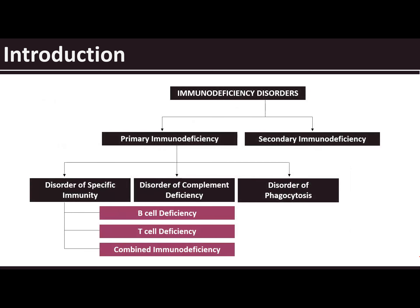Now, what are the different primary immunodeficiencies? Under disorders of specific immunity, you have B cell deficiency, T cell deficiency, and combined immunodeficiency — meaning both B and T cell deficiency.